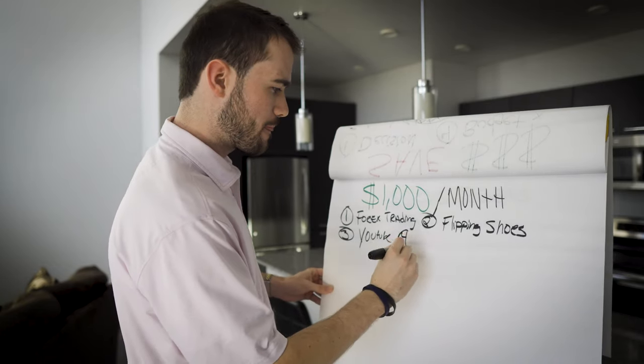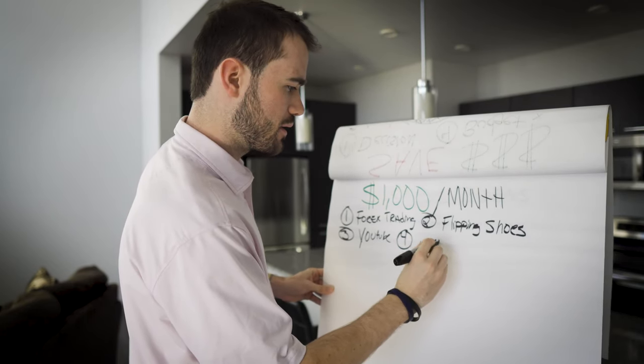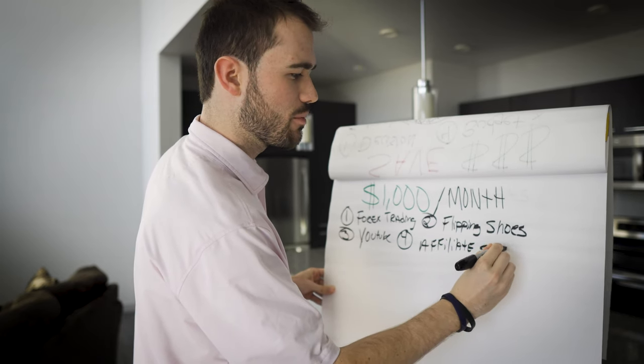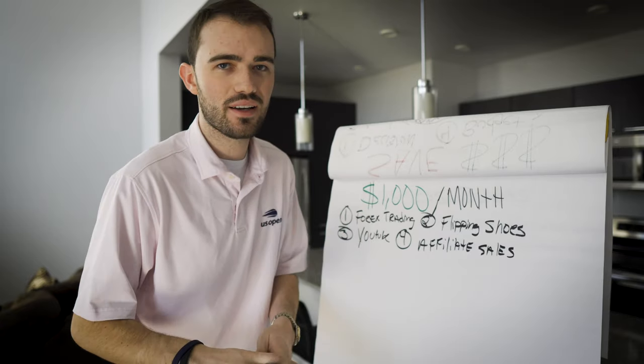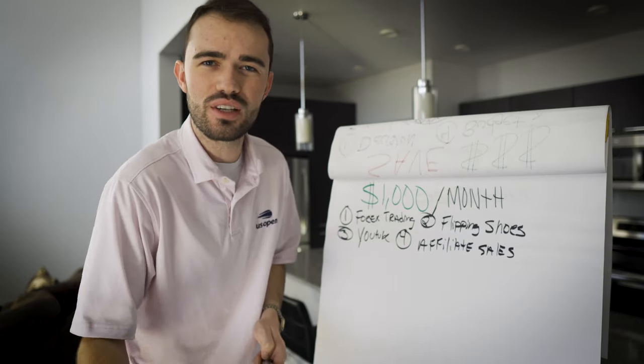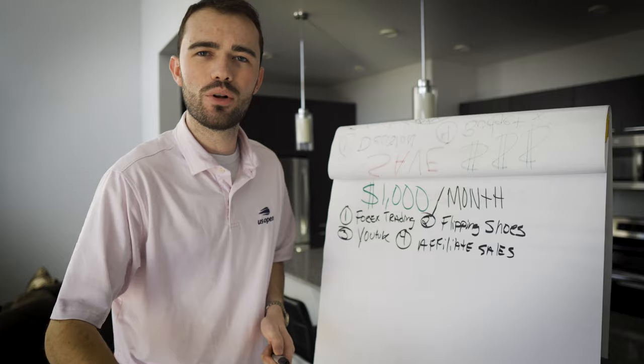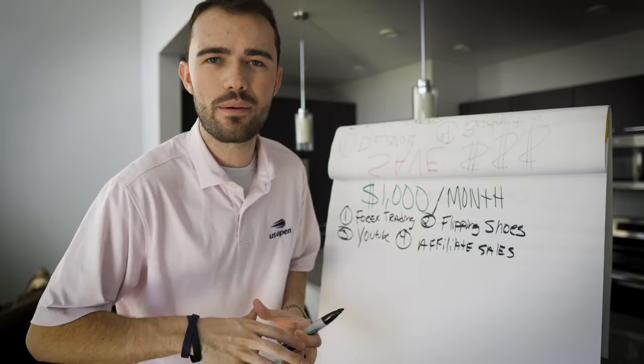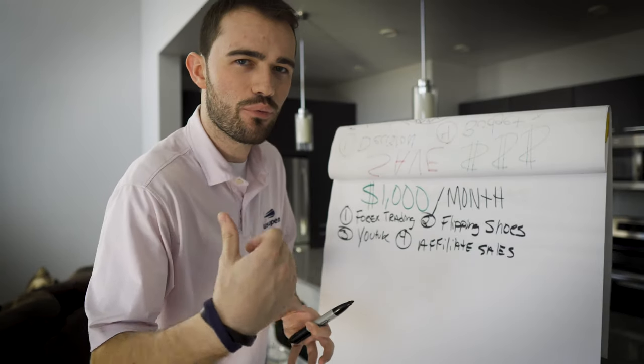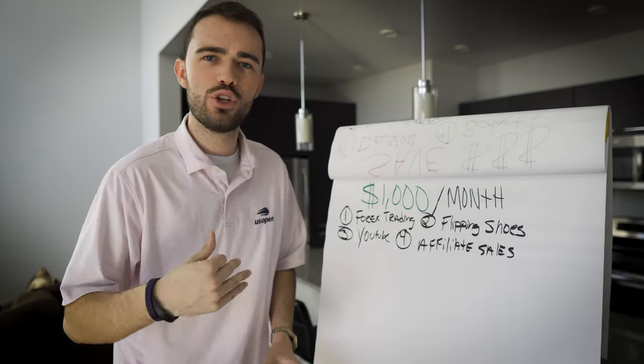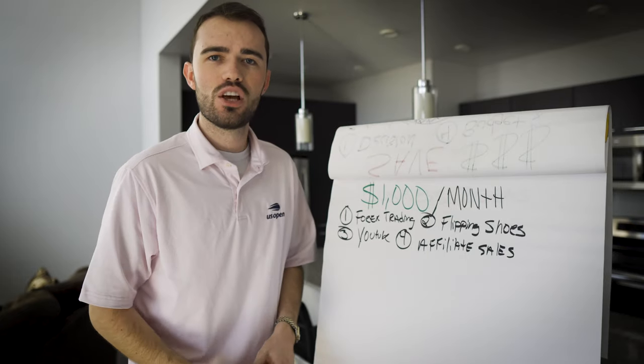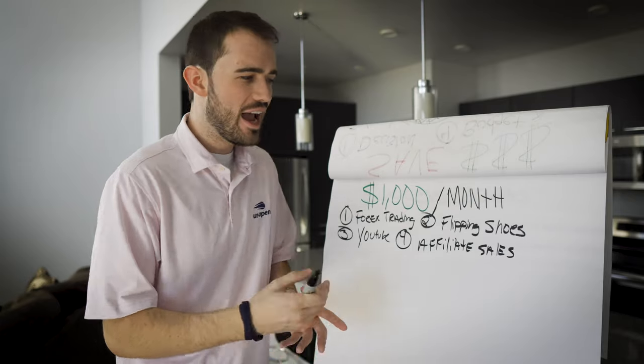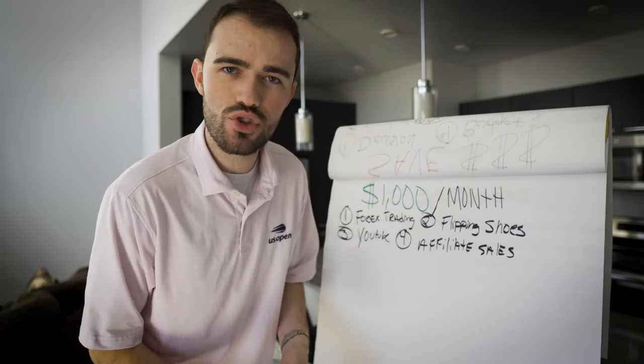Now, number four, affiliate sales. There are so many products online that you can get involved with. Heck, you guys may even be using some of them and you're enabled to sell them. Become an affiliate for a product you're already using is what I would recommend 10 times out of 10 and figure out if some product you're using right now, you can become an affiliate for so that you can go online, offline, shoot YouTube videos, walk down the street, meet people and make money selling these products or services.